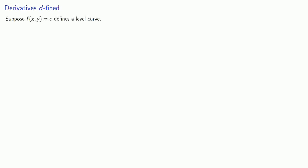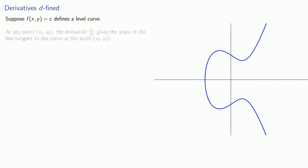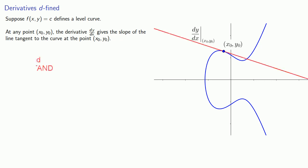Suppose f of xy equals c defines a level curve, some sort of curve in the Cartesian plane. At any point, the derivative gives the slope of the line tangent to the curve at the point. And the tangent line is the best linear approximation to the curve near the point of tangency.